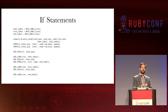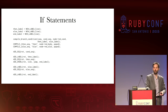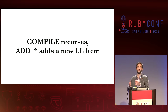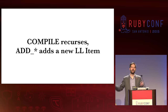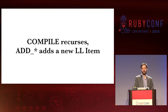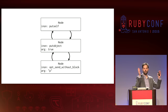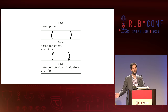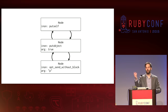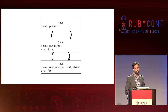The important thing to notice here is the macros called compile — those are the things that recurse. Any macro that starts with add_underscore actually adds a new link to your linked list. If we look at the linked list, we'll see something that ends up looking like this: an instruction sequence put_self, we're putting self up there; put_object puts true onto the stack; and then we call p, which pops off the stack and actually executes the function.